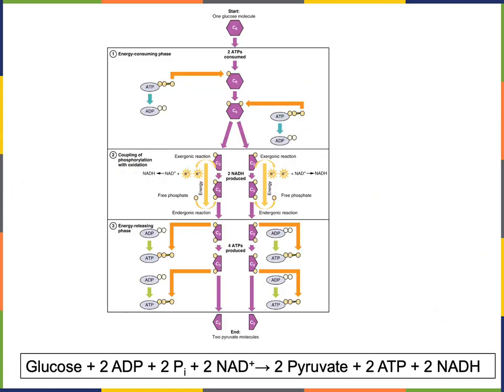To summarize the overall results of glycolysis: one molecule of glucose is converted to two molecules of pyruvate. In the energy-consuming phase we lost two ATP, and in the energy-releasing phase we gained four ATP, so a net total of two ATP molecules are produced. We also generated two molecules of NADH during the coupling of phosphorylation with oxidation step, catalyzed by glyceraldehyde-3-phosphate dehydrogenase.